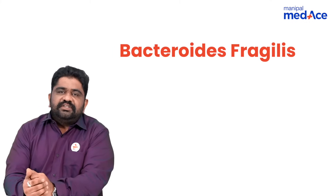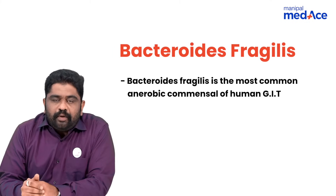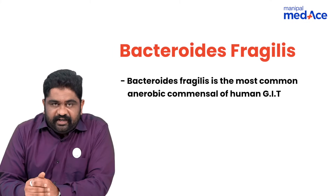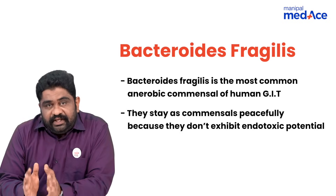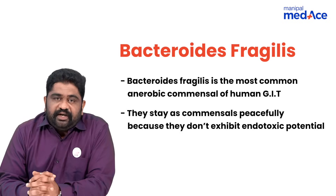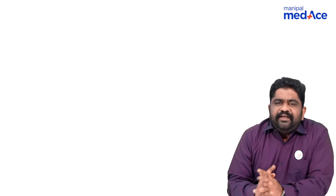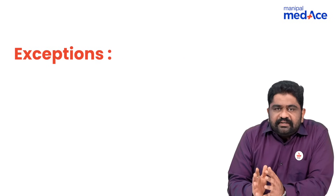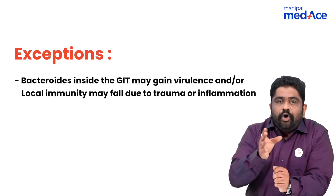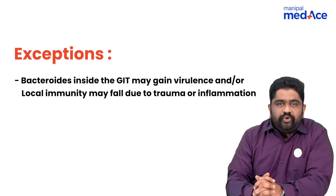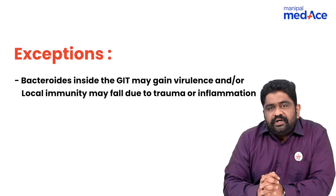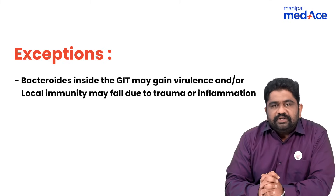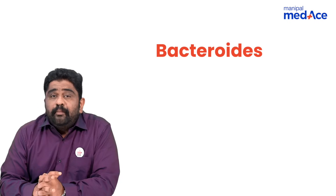Bacteroides fragilis is one of the most common anaerobic commensals of the human GIT and they coexist peacefully inside the GIT. But in certain conditions where they gain virulence or the local immune response has fallen, in those conditions, Bacteroides fragilis may cause intra-abdominal infections.